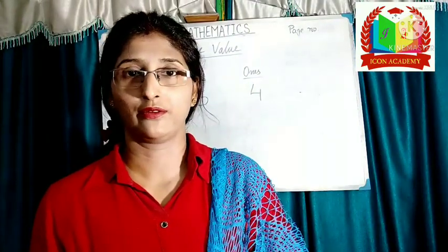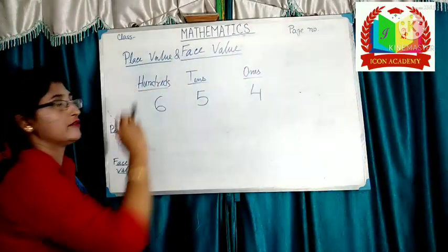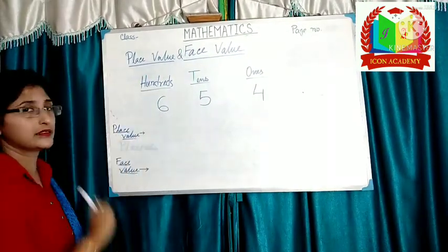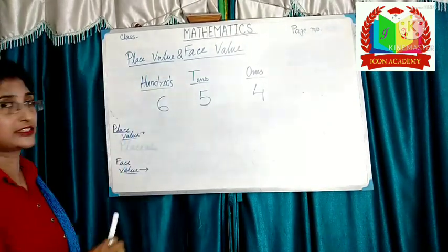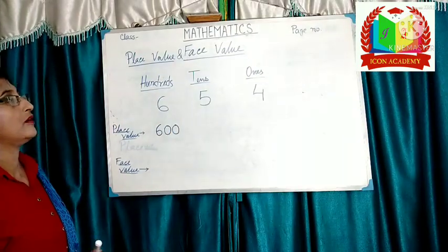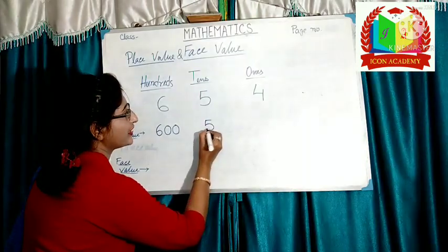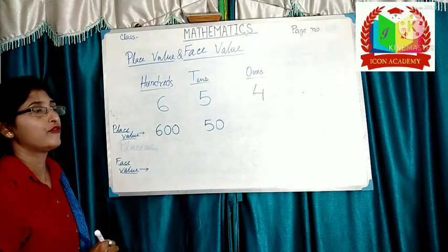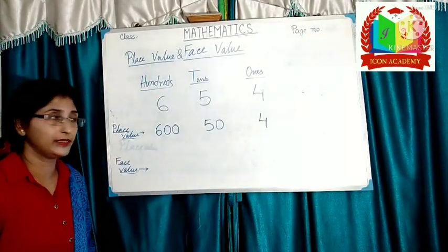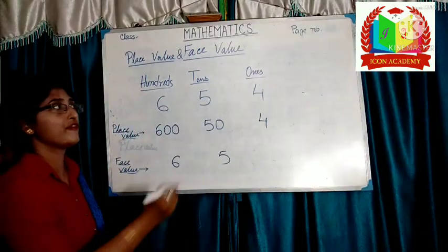Now, I am going to teach place value and phase value together. Let's take an example. Here the number is 654. 4 is in 1's place, 5 is in 10's place, and 6 is in 100's place. What is the place value of 6? 6 is in 100's place, so place value of 6 is 600. What is the place value of 5? 5 is in 10's place, so place value of 5 is 50. What is the place value of 4? 4 is in 1's place, so place value of 4 is 4. But phase value never changes: phase value of 6 is 6, phase value of 5 is 5, phase value of 4 is 4.